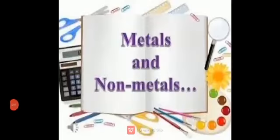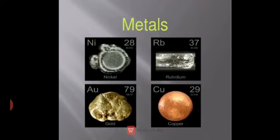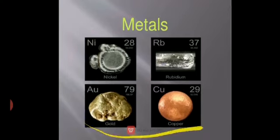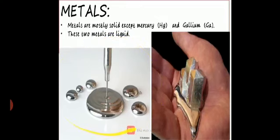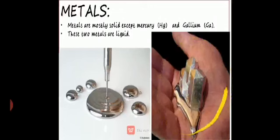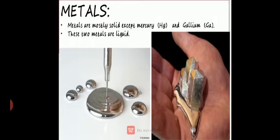The classification of elements includes metals and non-metals. We will study both groups one by one. Metals are mostly solid, except mercury and gallium. Mercury is always present in liquid form, and gallium is also a metal present in liquid form. These are the only two liquid metals.